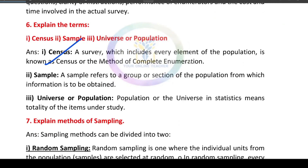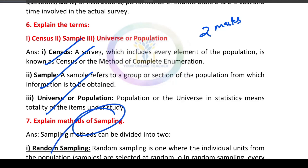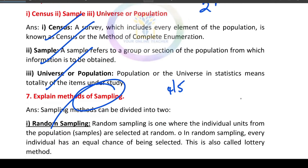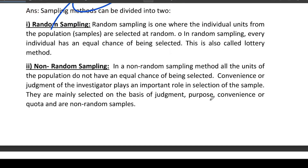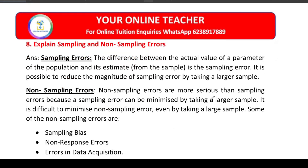What is the census? What is sampling? The universe. All of these are related to statistics. The basic theory questions include: what is sampling? What is the method? If you have random sampling and non-random sampling, you will get 3 or 4 marks.